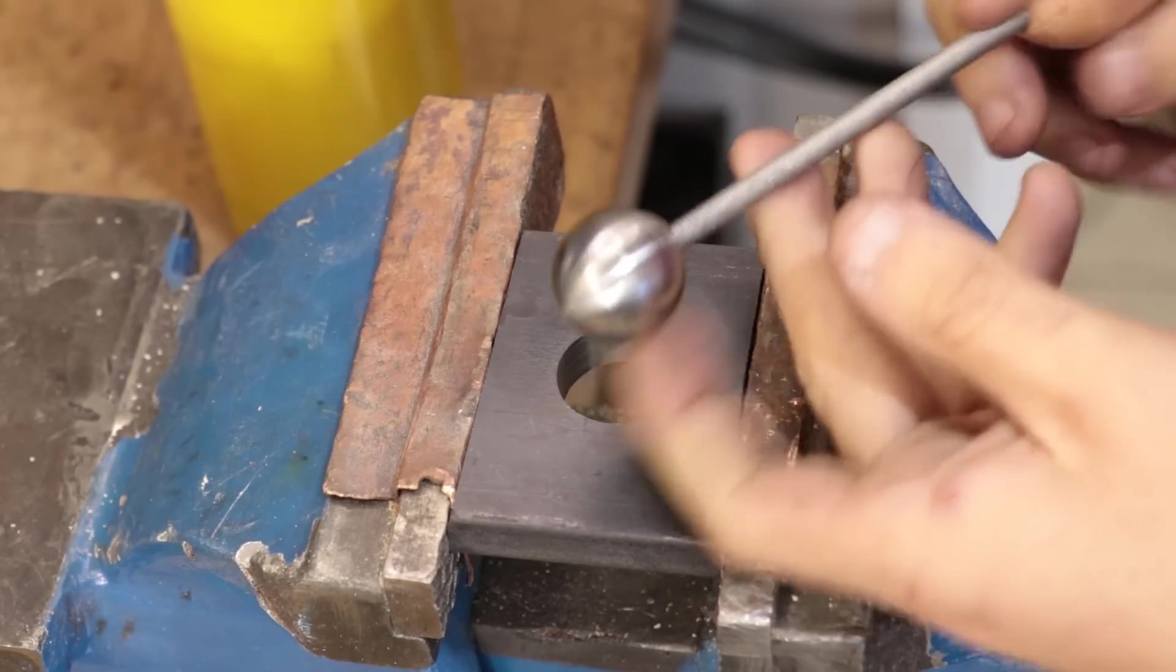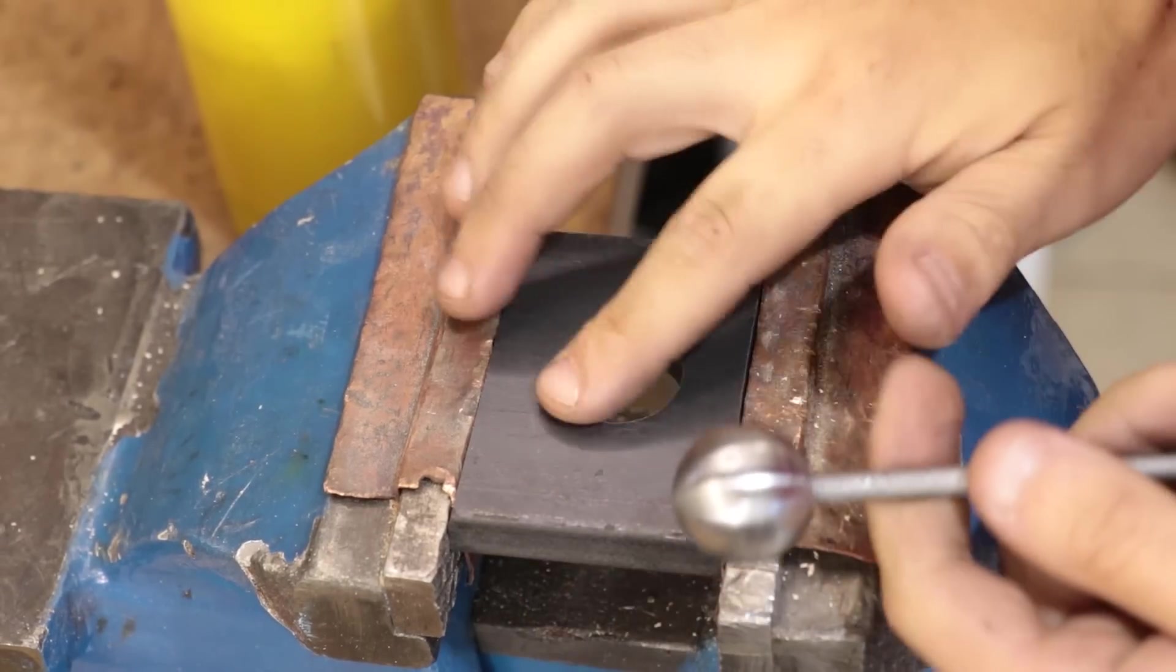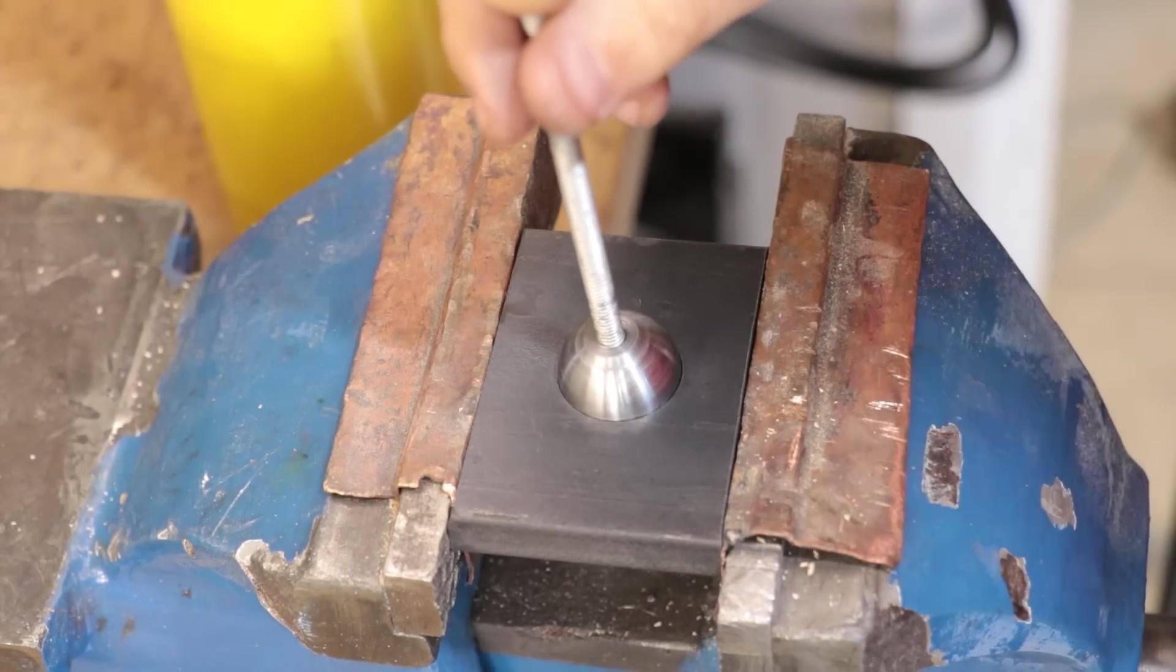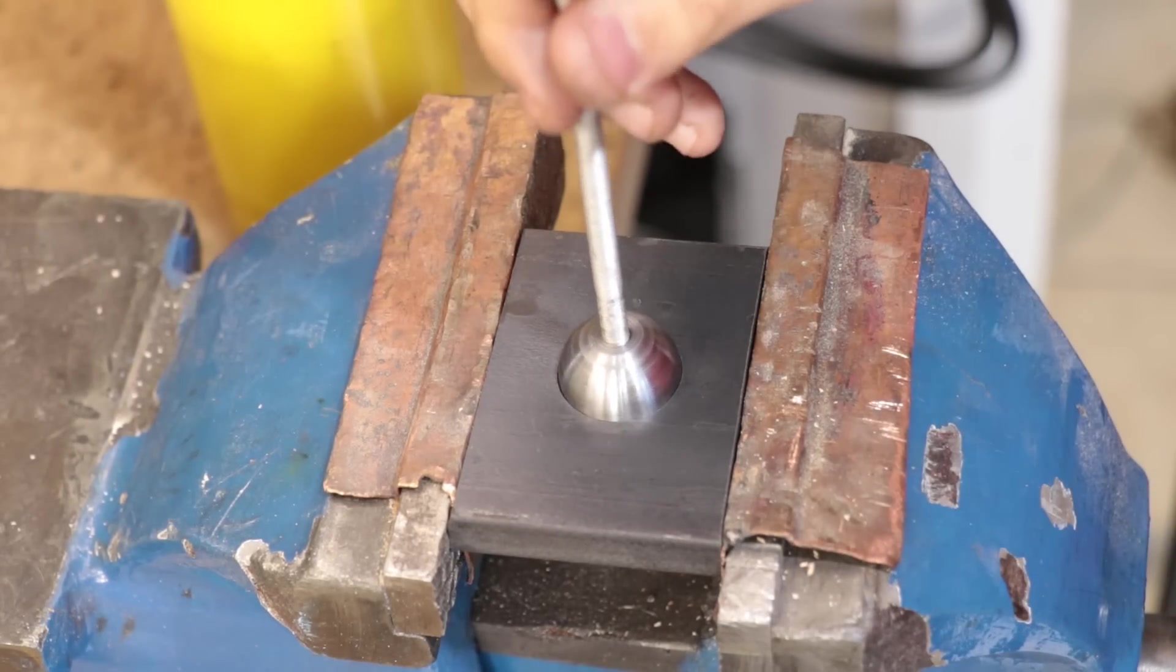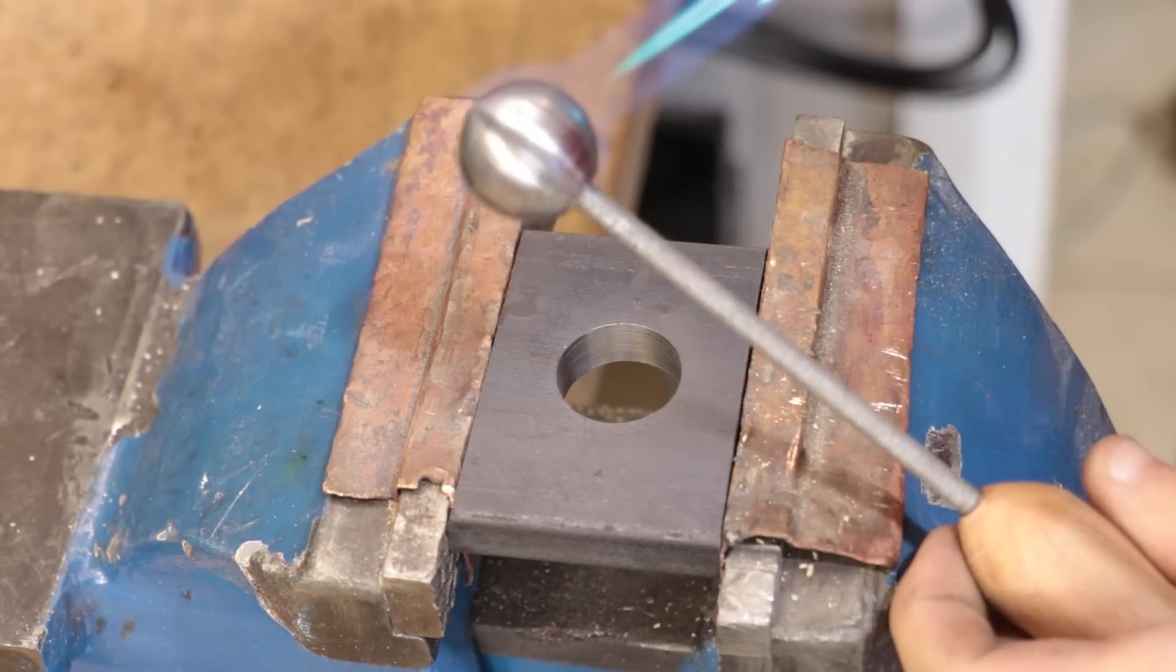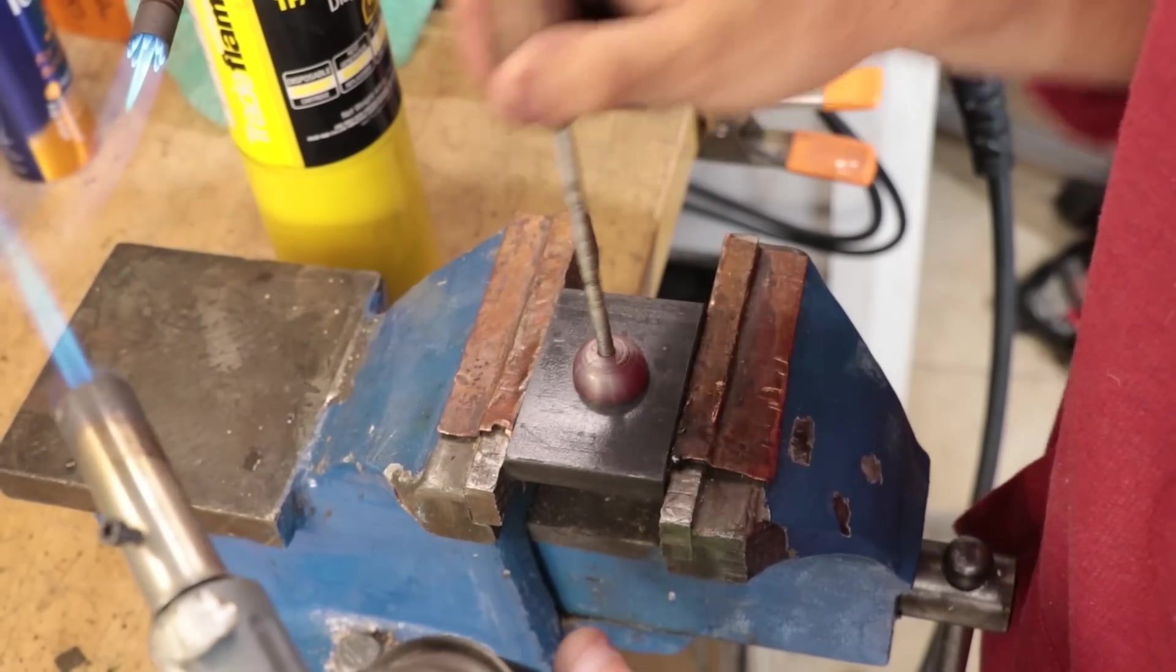Most of you probably did that experiment in high school science class where you get a steel ball and a ring that's almost the same size. At room temperature the ball can easily fit through, but as you heat it up the ball expands and it doesn't fit through anymore. That's all down to thermal expansion.